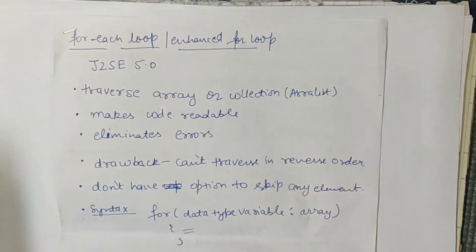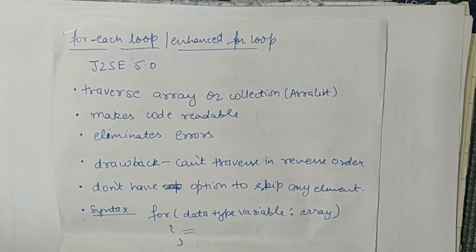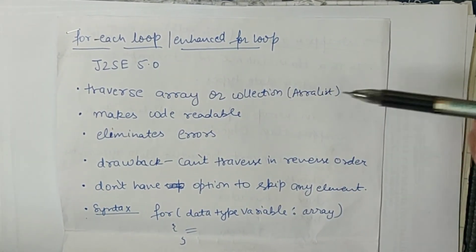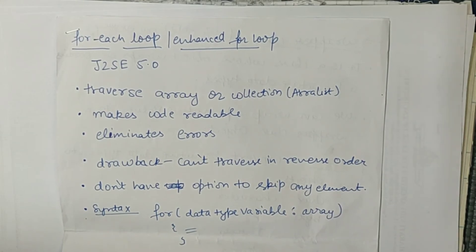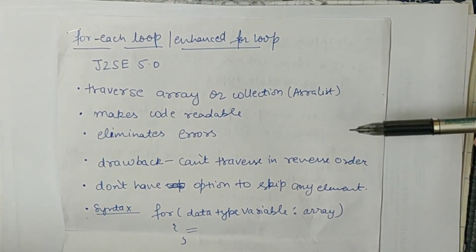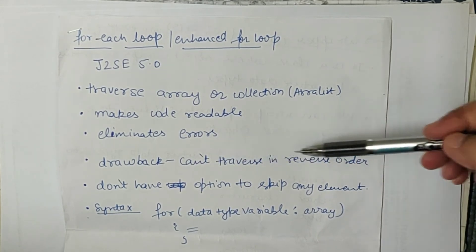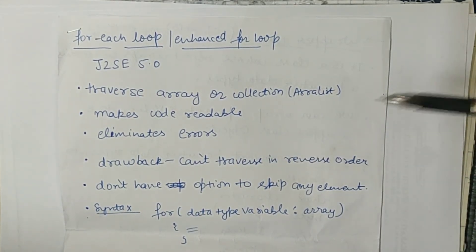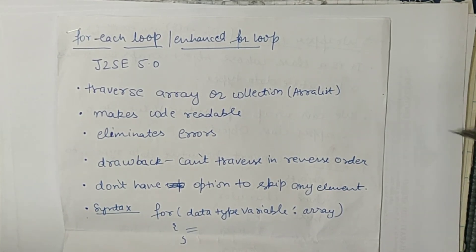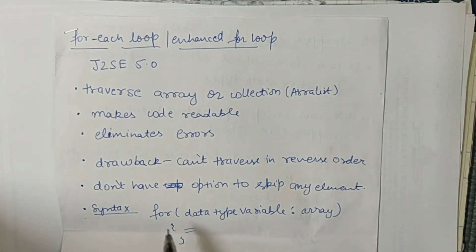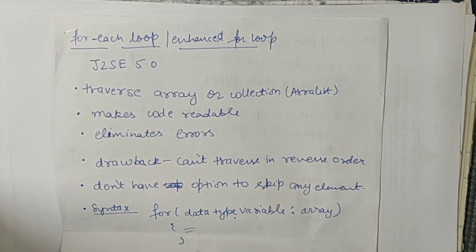Iske kuch key points hain. Yeh j2SE 5.0 se introduce hua hai. Traverse kar sakte hain — traverse matlab you can print each element in your array. It makes code readable. Eliminate errors. Drawback: you cannot traverse in reverse order — matlab 10 20 30 40 ko 40 30 20 10 print nahi kar sakte. You don't have the option to skip any element. Syntax hai: for(data type variable_name : array_name) aur phir jo bhi likhna ho.